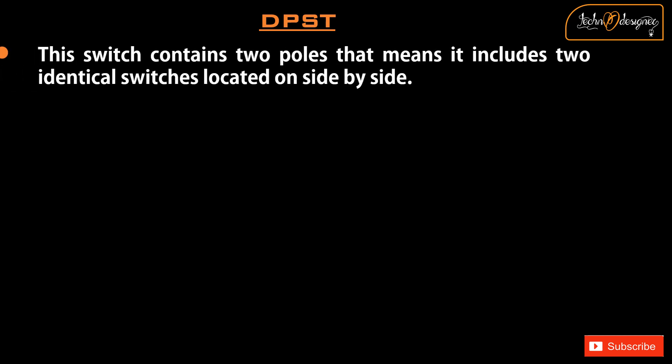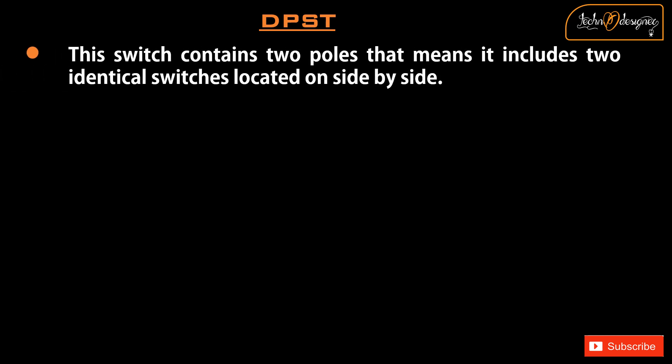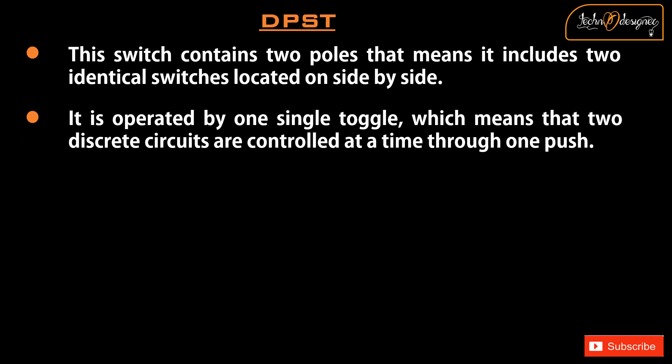DPST. This switch contains two poles, which means it includes two identical switches located side by side. It is operated by one single toggle, which means that two discrete circuits are controlled at a time through one push.